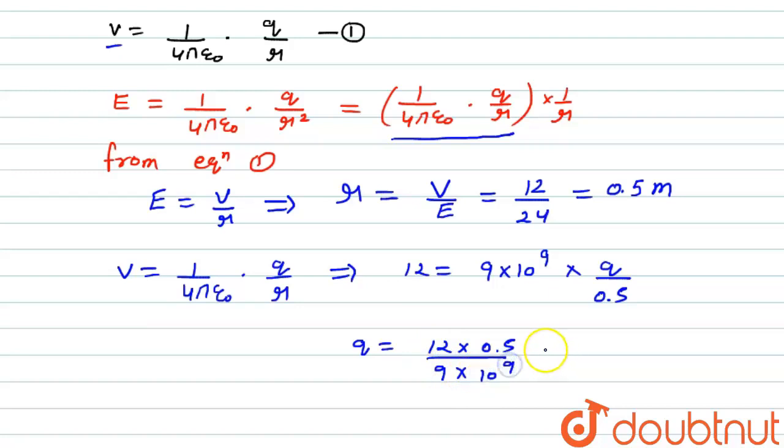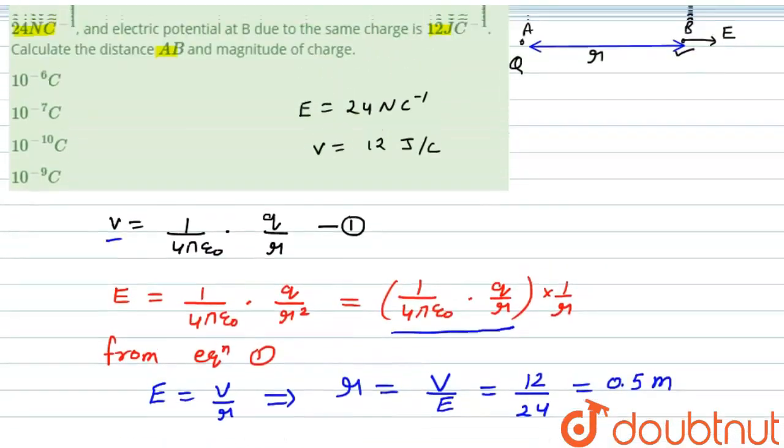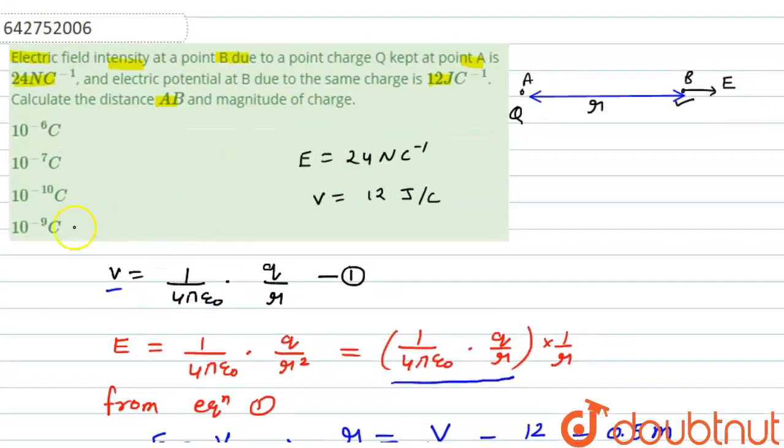So we can write Q will be equal to 12 × 0.5 divided by 9 × 10⁹. After simplification, we will get Q equals 0.667 × 10⁻⁹, so we can write it as 10⁻⁹ coulomb. The answer of this question is 10⁻⁹ coulomb which is fourth option. Thank you students.